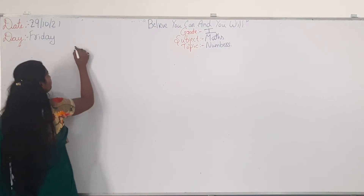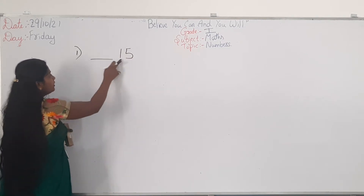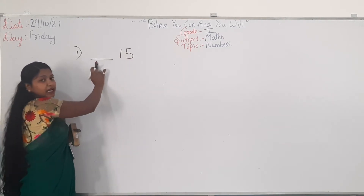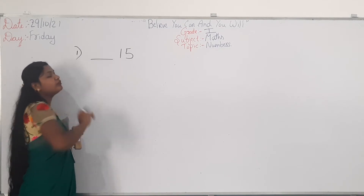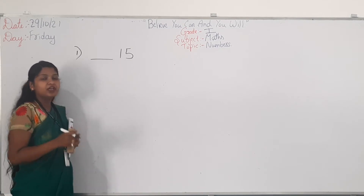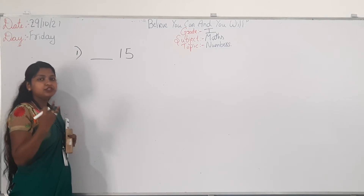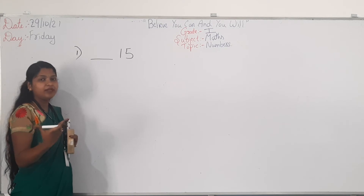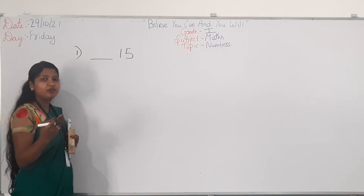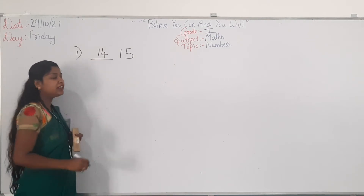For example, there is a blank before 15. Which number will come before 15? Let's count from 10: 11, 12, 13, 14, 15. So, which number will come before 15? It is 14.